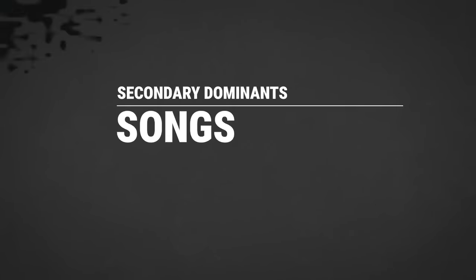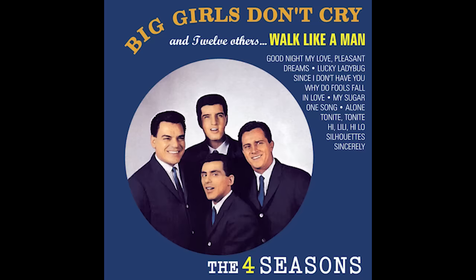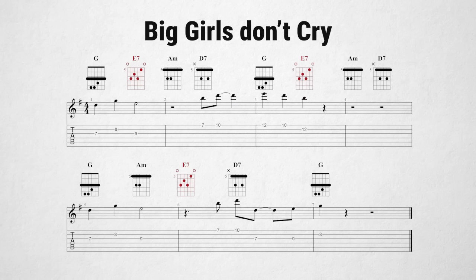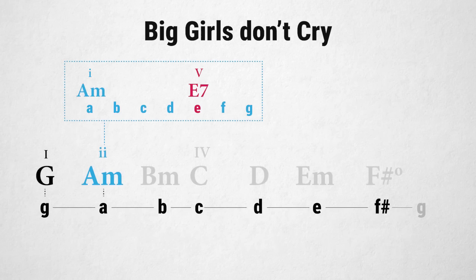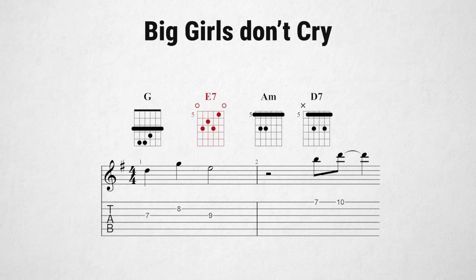Let's look at some popular songs that use secondary dominants. Starting with a classic: in 'Big Girls Don't Cry,' written in the key of G major, composer Bob Gaudio of the Four Seasons uses the E dominant seven chord as a secondary dominant for the A minor chord. A minor is the second degree in G major. The note E is the fifth note in the A minor scale, making E dominant seven the dominant for A minor. In G major, E dominant seven is the five of two, and it sounds like this.